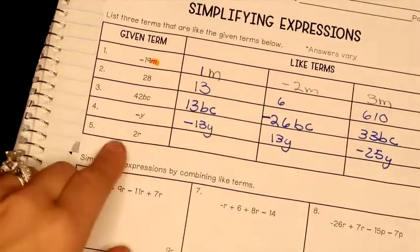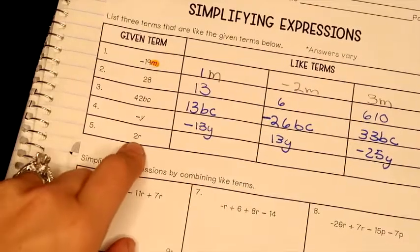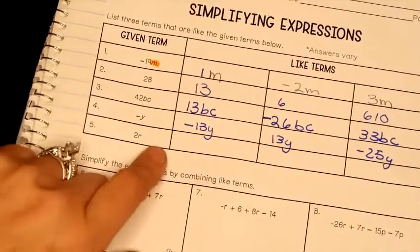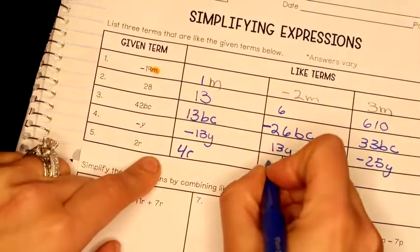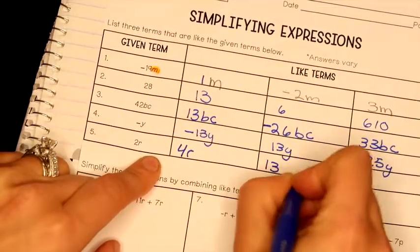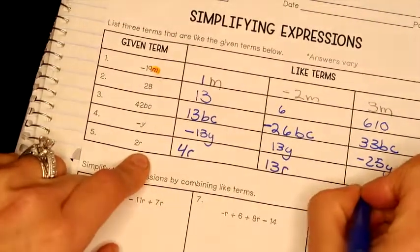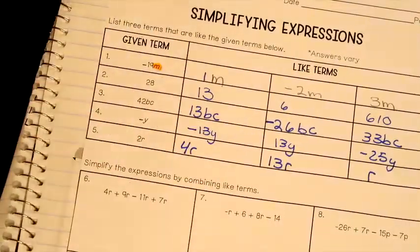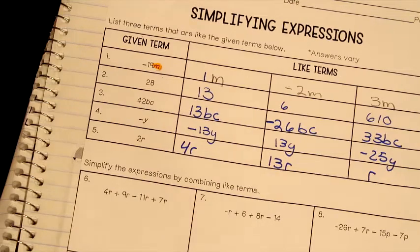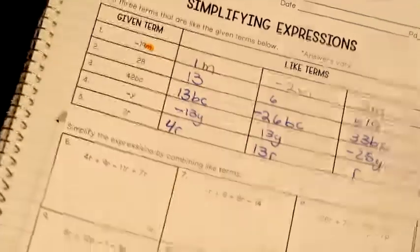Last but not least is 5, and it's 2R. A like term would be 4R. I like 13, let's keep 13R and just R. Because again, when we just have an R, don't make fun of my R kids, but when we have an R, we assume that there is a 1 in front of it.